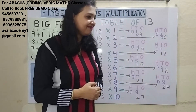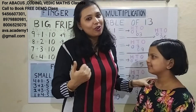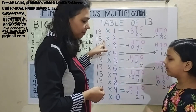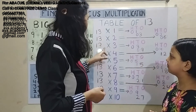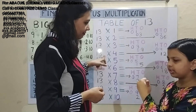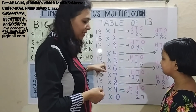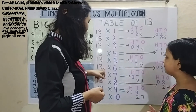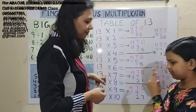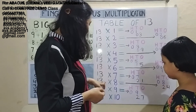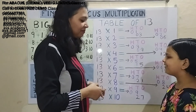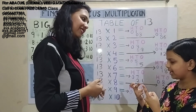Kritika, please come. Hi! Ready Kritika? Yes. Friends, ready? Okay, let us start. 13 ones are: 1 one is 1, 3 ones are 3, answer is 13. 13 twos are: 1 two is 2, 3 twos are 6, answer is 26. 13 threes are: 1 three is 3, 3 threes are 9, answer is 39. 13 fours are: 1 four is 4, 3 fours are 12, answer is 52. 13 fives are: 1 five is 5, 3 fives are 15, answer is 65. 13 sixes are: 1 six is 6, 3 sixes are 18, answer is 78. 13 sevens are: 1 seven is 7, 3 sevens are 21, answer is 91. 13 eights are: 1 eight is 8, 3 eights are 24, answer is 104. 13 nines are: 1 nine is 9, 3 nines are 27, answer is 117.